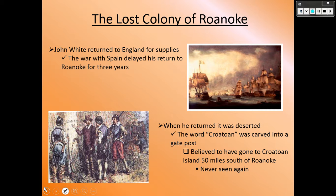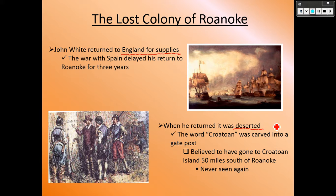Roanoke is interesting because no one knows what happened to those people. John White had to leave and return to England for supplies because there were no food stores in the new world — no farmlands, no crops, no infrastructure to survive. When he returned, everyone had left. The island was entirely empty, and the only clue was the word 'Croatoan,' believed to be an island south of Roanoke. Theories suggest they went there, but their boat may have been lost at sea or native Americans may have captured them.